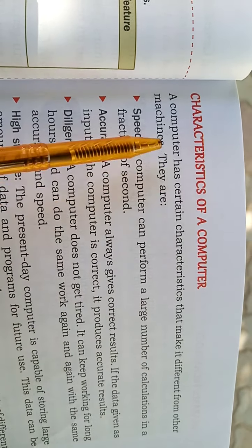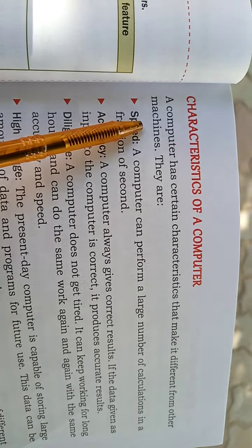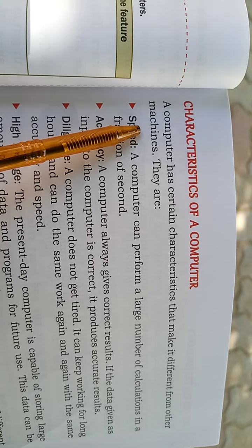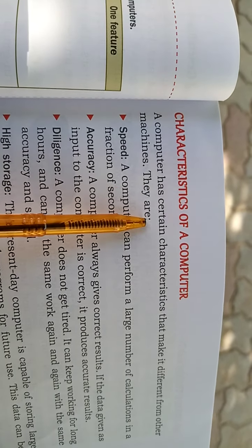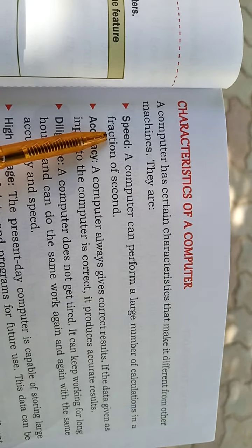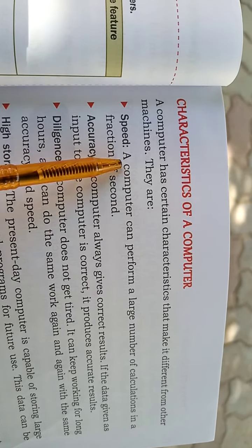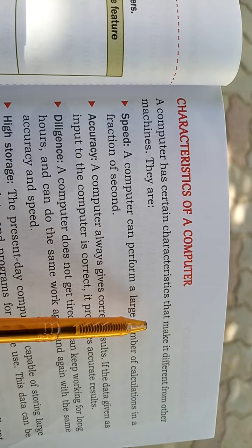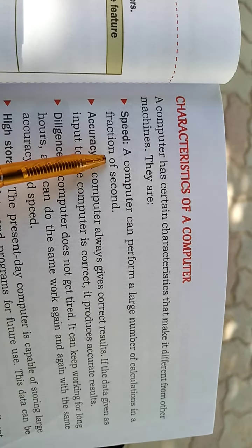A computer has certain characteristics that make it different from other machines. The first characteristic is speed. A computer can perform a large number of calculations in a fraction of a second.